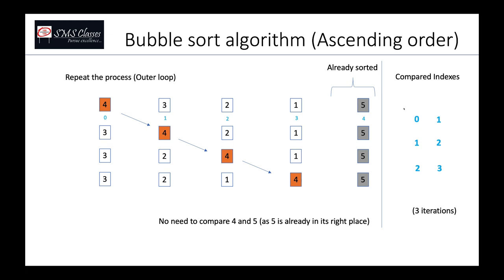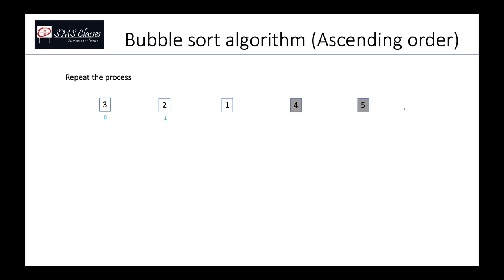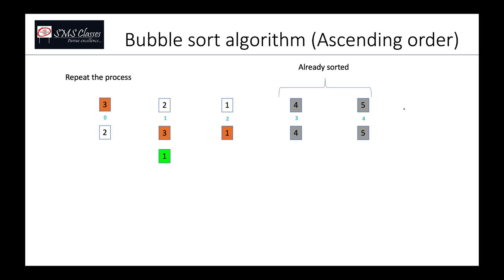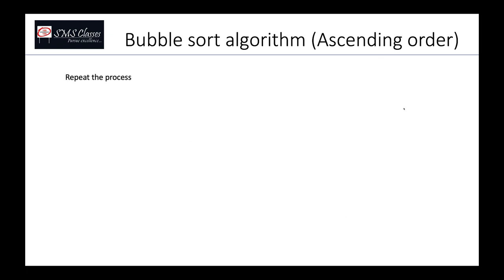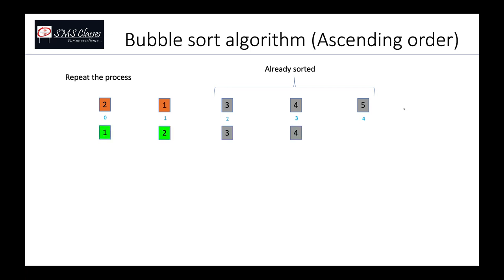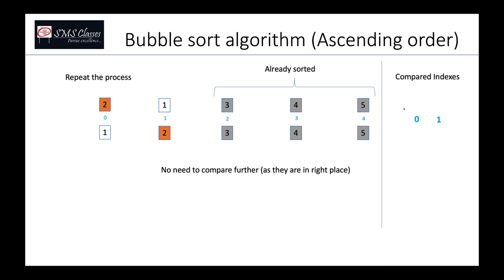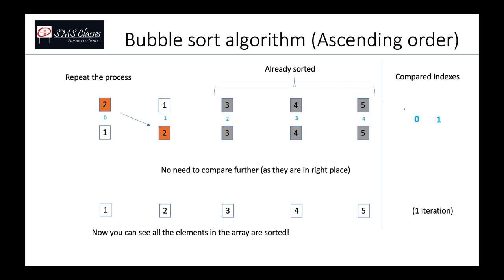On the next pass, four and five are already sorted, so we only compare indices (0,1) and (1,2) — two iterations. On the final pass, we compare only once at index (0,1), swapping to get [1, 2, 3, 4, 5]. The array is now fully sorted. That is the bubble sort algorithm.